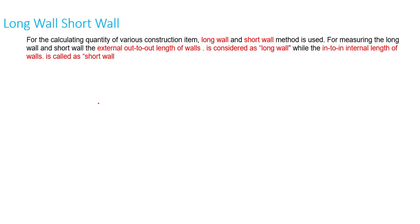So what is the long and short wall method for calculating the quantity of various construction items? For measuring the long wall and short wall, the out to out length of the wall is considered as the long wall, while the in to in or internal length of the wall is called the short wall.